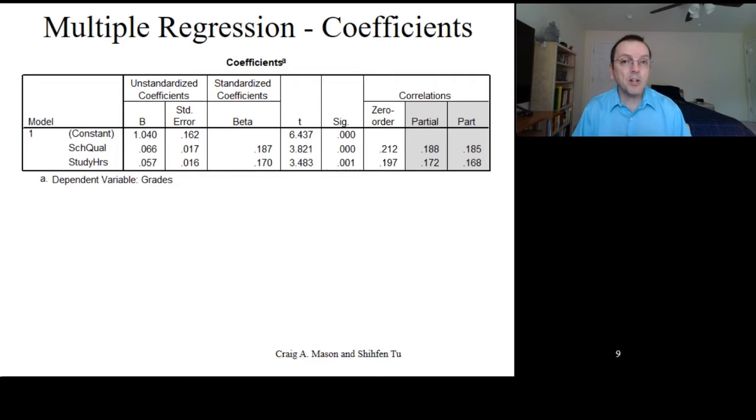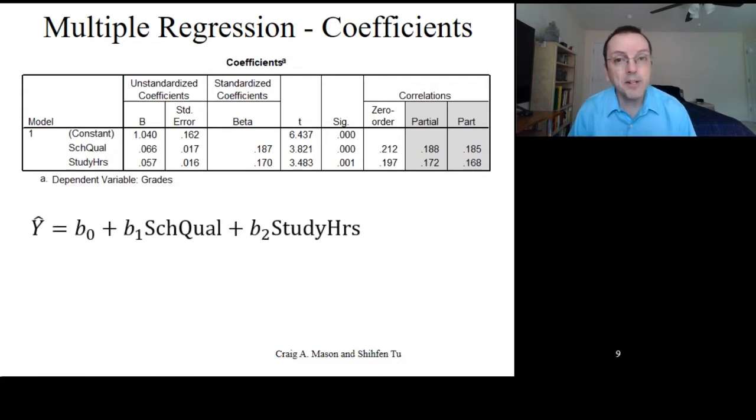So, based on the coefficients table, writing the regression equation is fairly straightforward. y-hat, our predicted outcome, grades, is equal to b0 plus b1 times our first x, our first predictor, in this case that's school quality, plus b2 times x2, our second predictor, which is study hours.